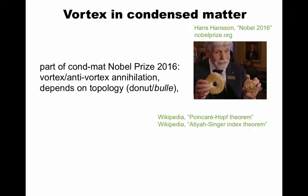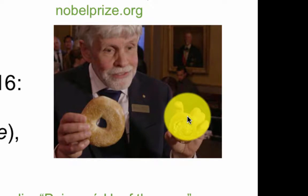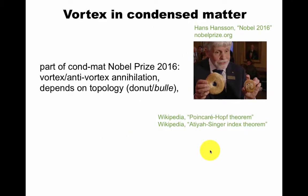In fact, in condensed matter, vortex-anti-vortex annihilation in material science gave a part of the Kosterlitz-Thouless Nobel Prize in 2016. Here, my former office neighbor, Hans Hansson, is explaining this in terms of donuts versus the Swedish bulle, or cinnamon bun. They clearly have different topology, even though there's a little bit of a hole here. So this is relevant for these index theorems.